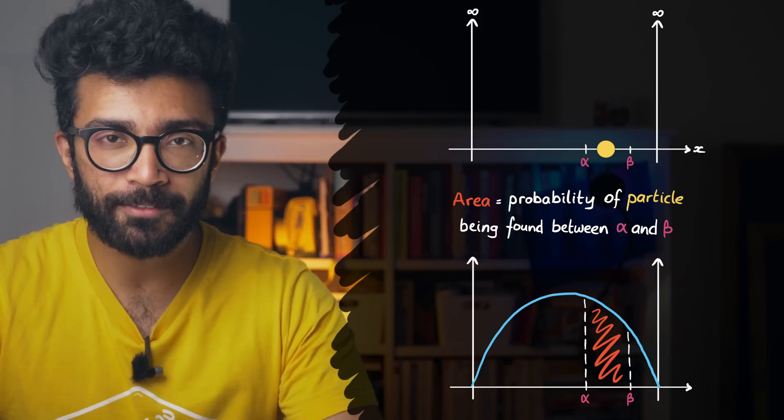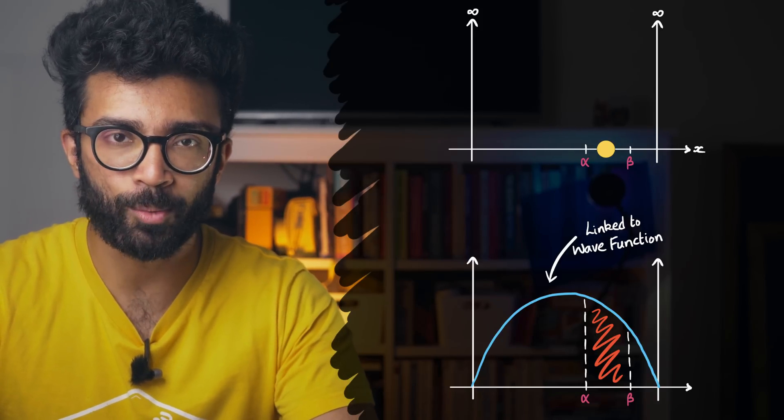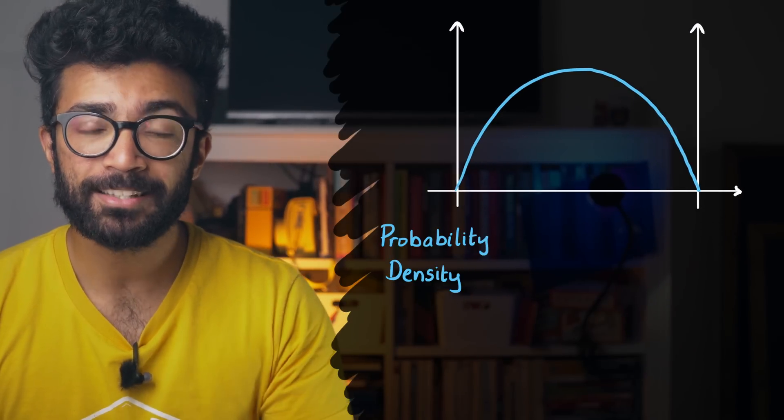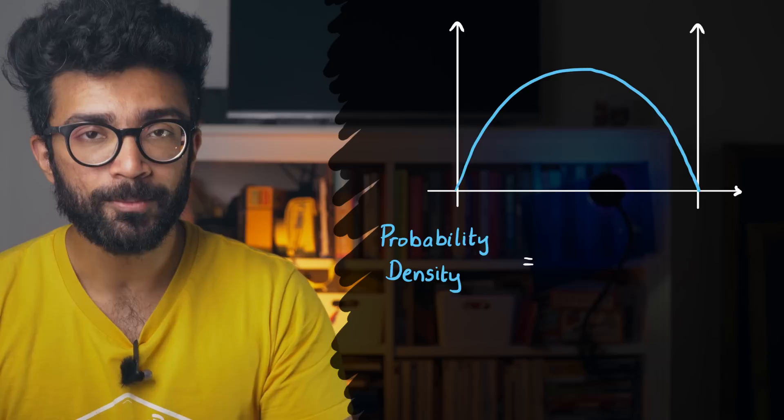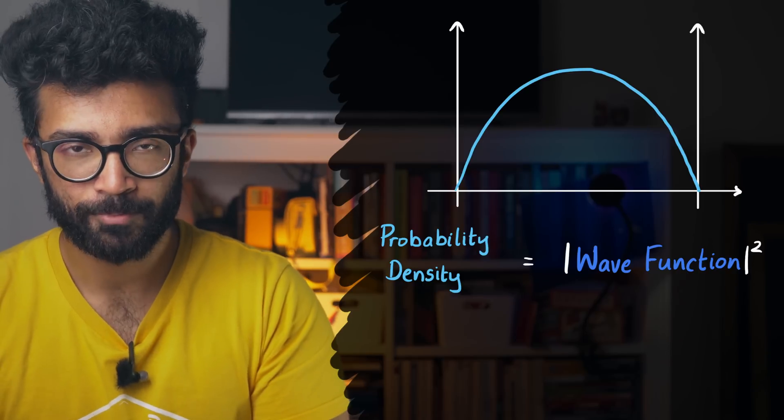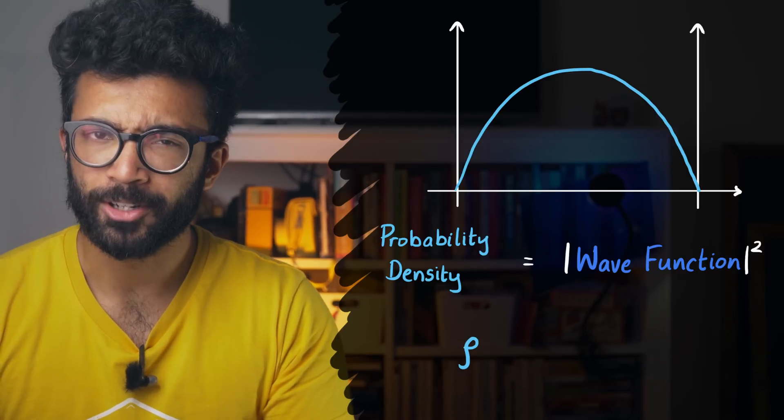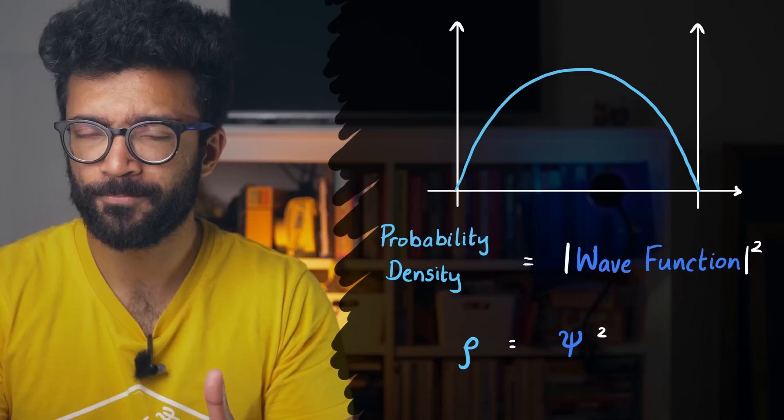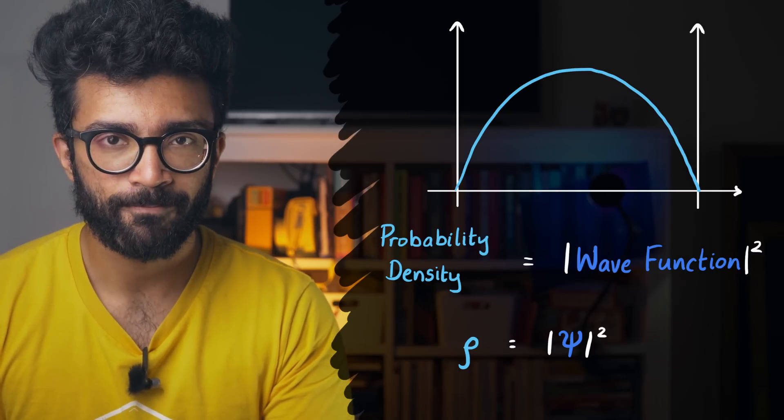And this probability density function is directly linked to what we call the system's wave function. Specifically, the probability density function is equal to the square modulus of the wave function. But hang on, if we square something, then won't it be positive anyway? Why do we need to take the modulus here?